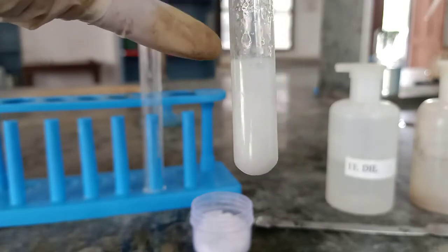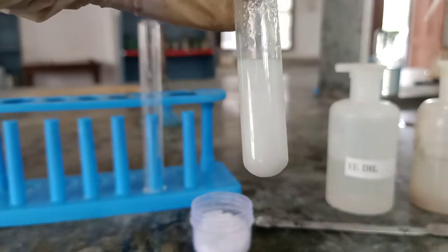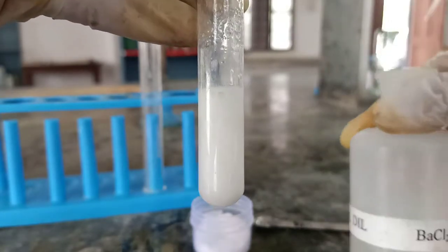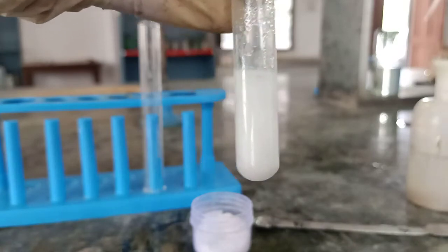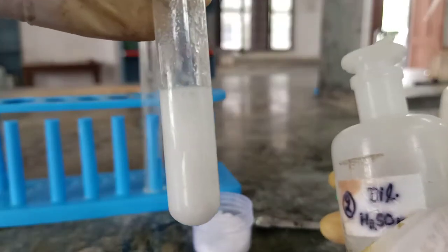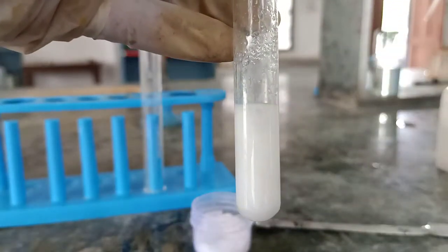Now for second confirmatory, to this solution itself, I will add few drops of dilute H2SO4. Sorry, this is barium chloride. So I will add few drops of dilute H2SO4.